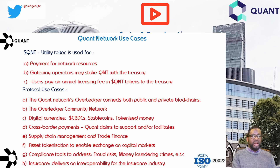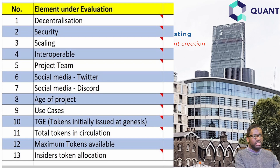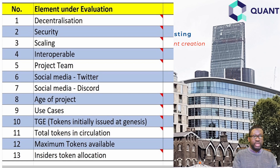We are going to apply 13 elements to establish the credentials for Quant Network and whether it is a viable investment. The 13 elements are: decentralization, security, scaling, interoperability, project team, social media via Twitter, social media via Discord, edge of the project, use cases, tokens issued at project launch, tokens in circulation at the time of recording, maximum tokens available, and insider token allocation.